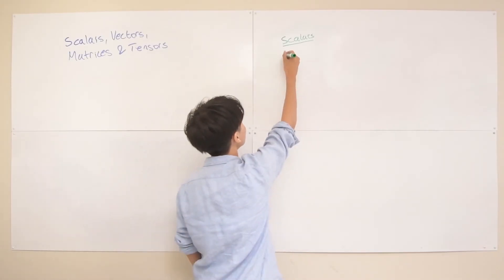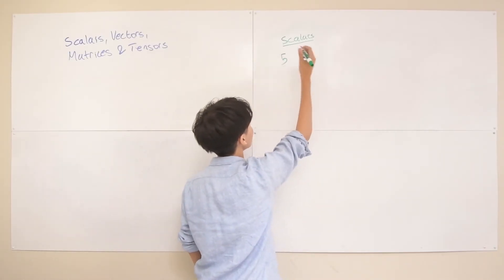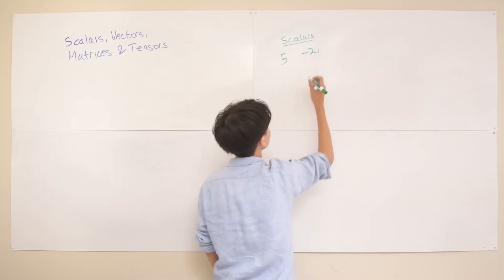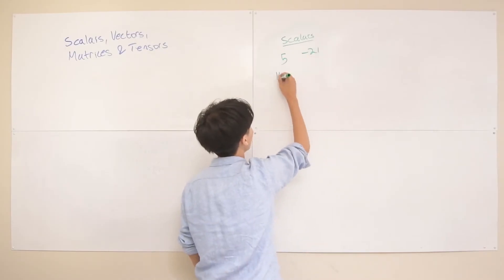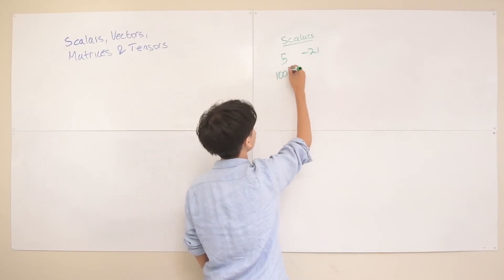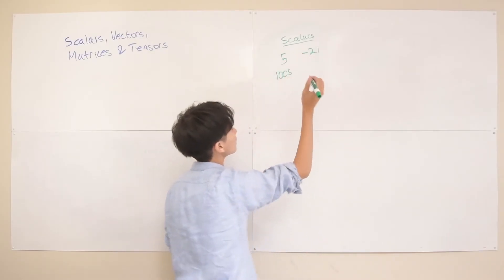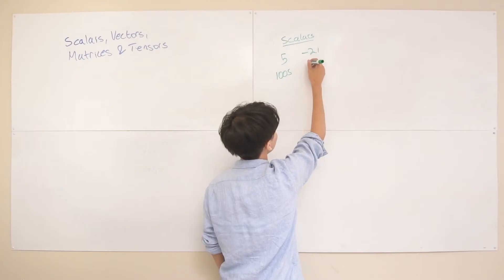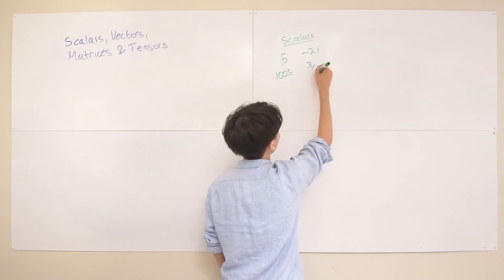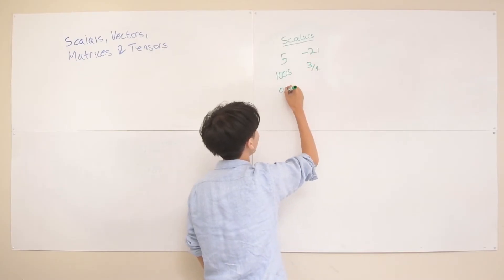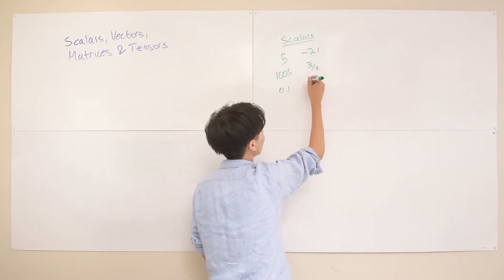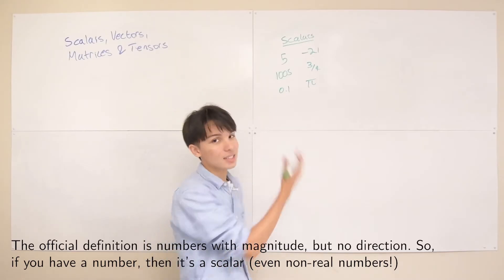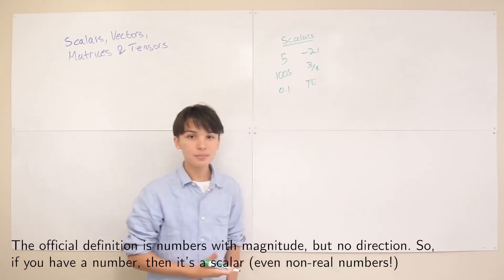Let's give some examples. So 5 is a scalar, negative 21 is a scalar, 1005 is a scalar, 3 over 4, 0.1, and even irrational numbers like pi are scalars — really just any single number.